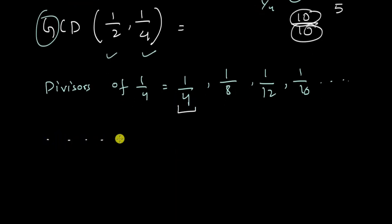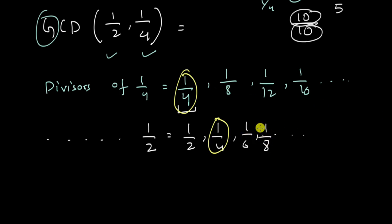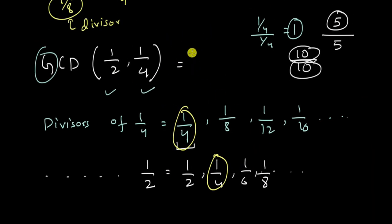Similarly, if we list down the divisors of 1/2, we get 1/2, 1/4, 1/6, and so on. Now we can clearly see the greatest common divisor. Here 1/4 is common to both lists. 1/8 would be another common divisor, but it is not the greatest — 1/4 is the greatest. Therefore, the GCD of 1/2 and 1/4 is 1/4.